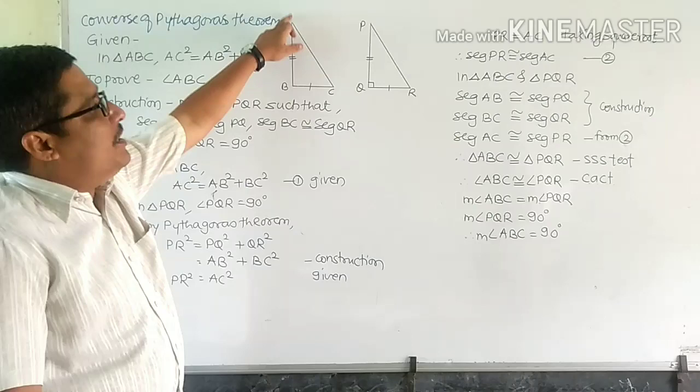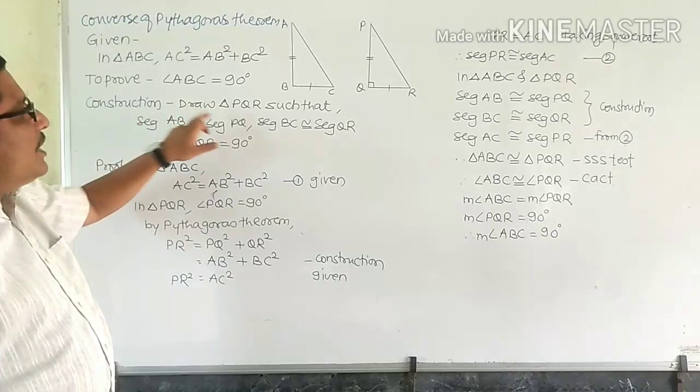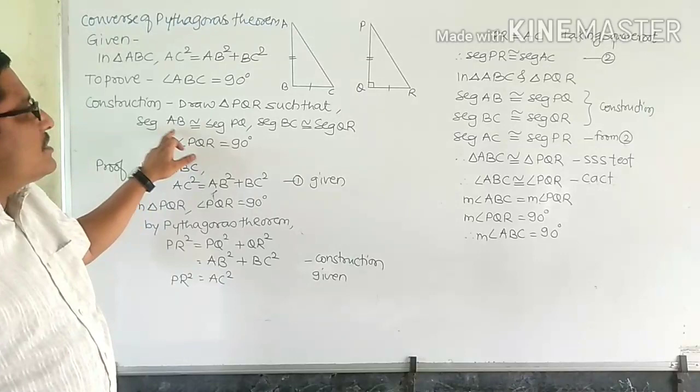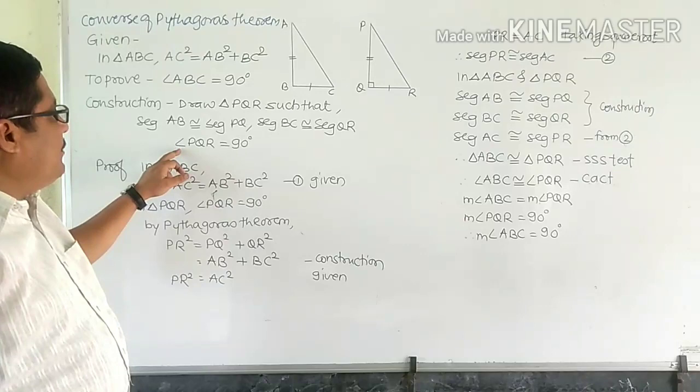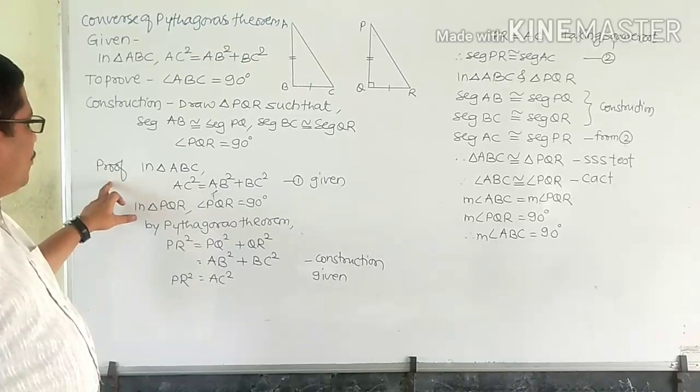So if we prove that angle ABC is 90 degrees, that means the triangle will be a right angle triangle. For construction, we have to draw another triangle PQR, such that segment AB is congruent to segment PQ, segment BC is congruent to segment QR, and angle PQR is a right angle.